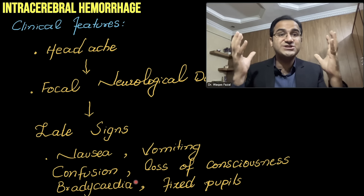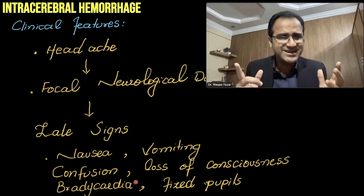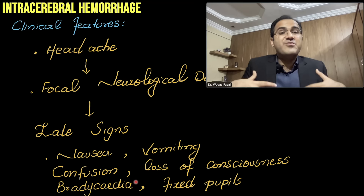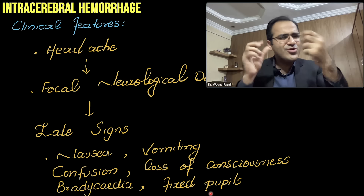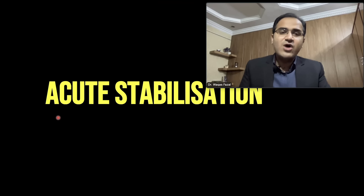I have explained Cushing's triad in detail in my video on raised intracranial pressure. Basically, Cushing's triad involves bradycardia, bradypnea (slowed respiration), and hypertension. Fixed pupils may also be present — one pupil may be more dilated than the other and not react to light. These are late features indicating increased intracranial pressure.